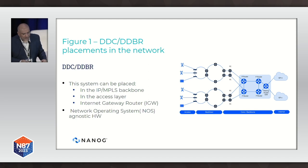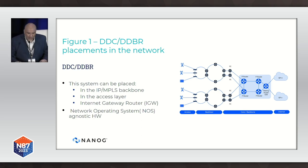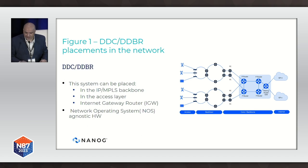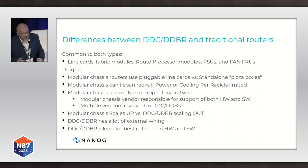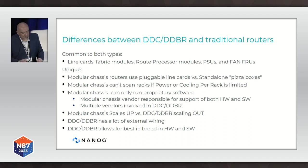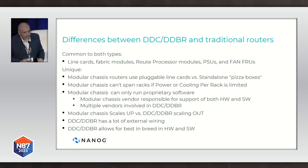This is what DDC-DDBR looks like in the network. The system can be placed in the IP MPLS backbone, in the access layer, and can also act as an internet gateway router, all while being hardware agnostic for its network operating system. What are some of the differences between traditional routers and this new concept? Just like regular routers, you have line cards, fabric modules, route processor modules, power supplies, and fans. What's unique is that modular chassis routers use pluggable line cards, whereas the new system uses standalone pizza boxes. Modular chassis cannot span multiple racks if your power or cooling is limited — this is where the disaggregated router comes into play.